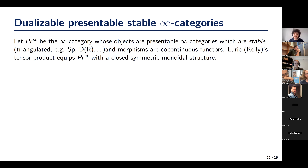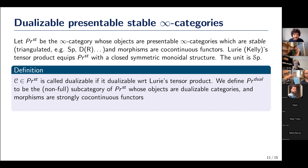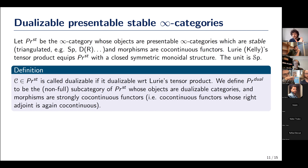Let Pr^{st} be the infinity category whose objects are presentable infinity categories that happen to be stable — if you don't know what stable means, think of it as an enhancement of a triangulated category; examples are spectra or the derived category of a ring. In this category, morphisms are the cocontinuous functors, equivalently left adjoints. Lurie and Kelly's tensor product equips Pr^{st} with a closed symmetric monoidal structure. Spectra is idempotent, so this descends to a monoidal structure for the dualizable things, with the unit being the infinity category of spectra.